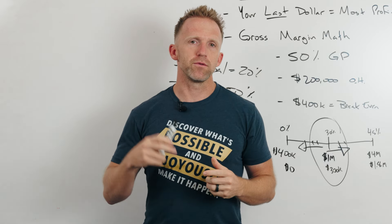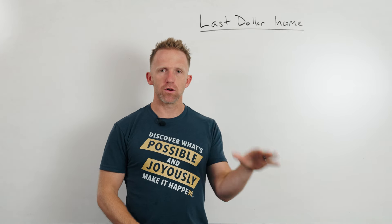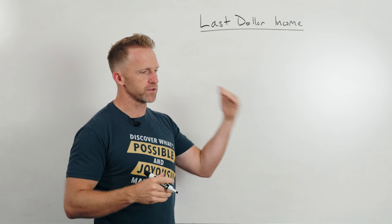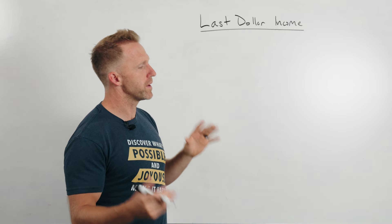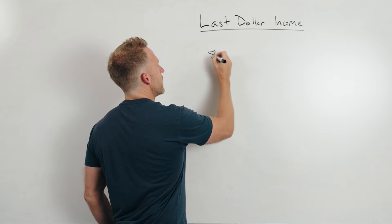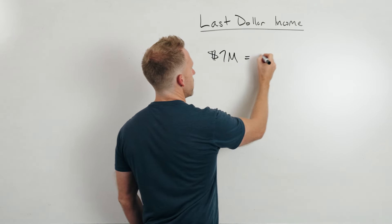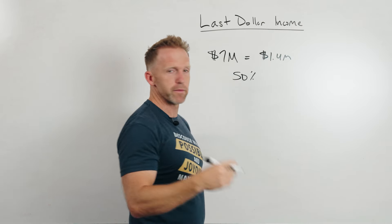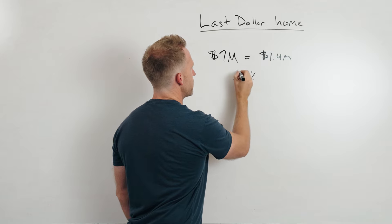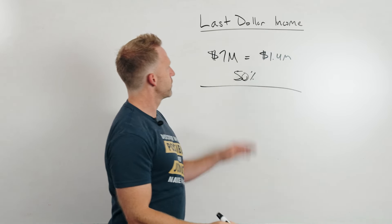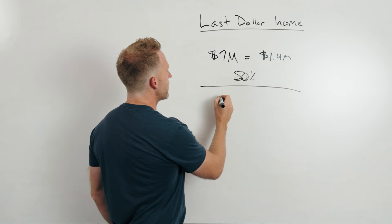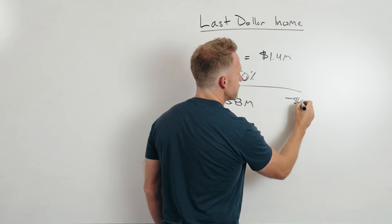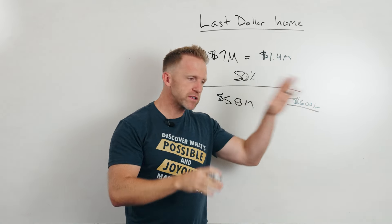Now let me give you a couple more examples about why this is so important. This is how it cost me millions of dollars. For a long time we would set big, ambitious goals. One year we had a goal of $7 million and wanted to make $1.4 million in profit, with about a 50% gross profit margin. What actually happened is we hit about $5.8 million — $1.2 million short — which was a $600,000 loss in profit.